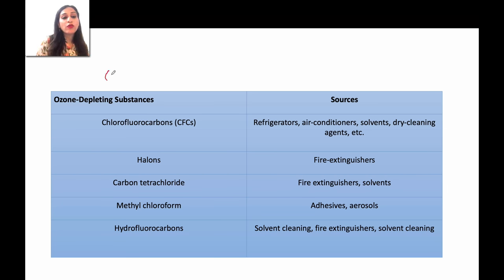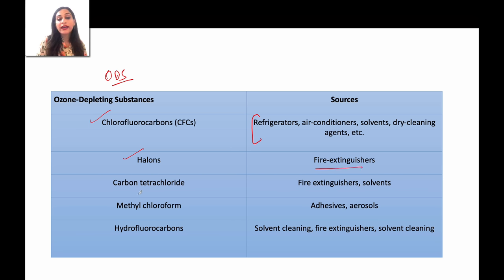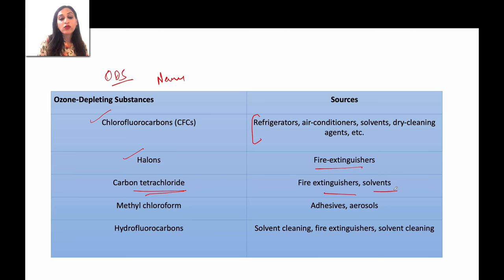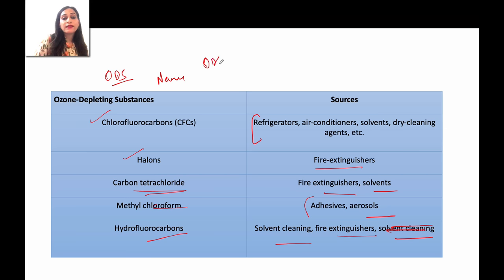Ozone-depleting substances (ODS) and their sources: chlorofluorocarbons, halons which are used in fire extinguishers, carbon tetrachloride which is also used in fire extinguishers, methyl chloroform, adhesives, aerosols, hydrofluorocarbons, solvent cleaning, and fire extinguishers. This ODS is very dangerous — these are the ozone-depleting substances.